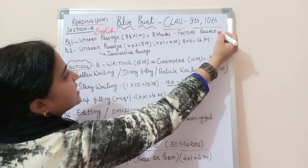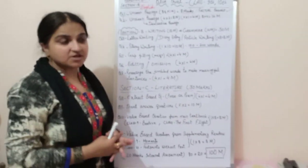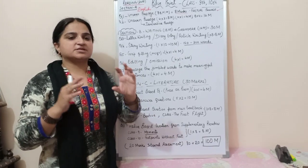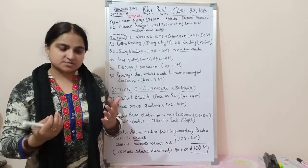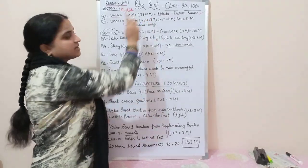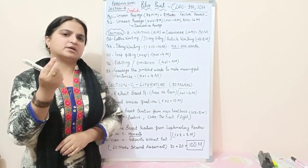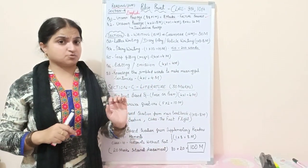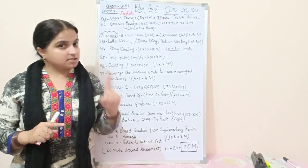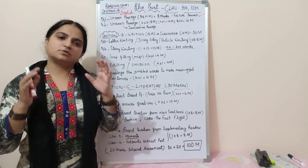Question number one is a factual passage. A factual passage means only facts are given and you have to find out those facts. The answers may be asked in one word or one sentence. If you write just a one-word answer and it is correct, you will get full marks. Eight questions carry one mark each — some facts are given and you have to answer the questions.